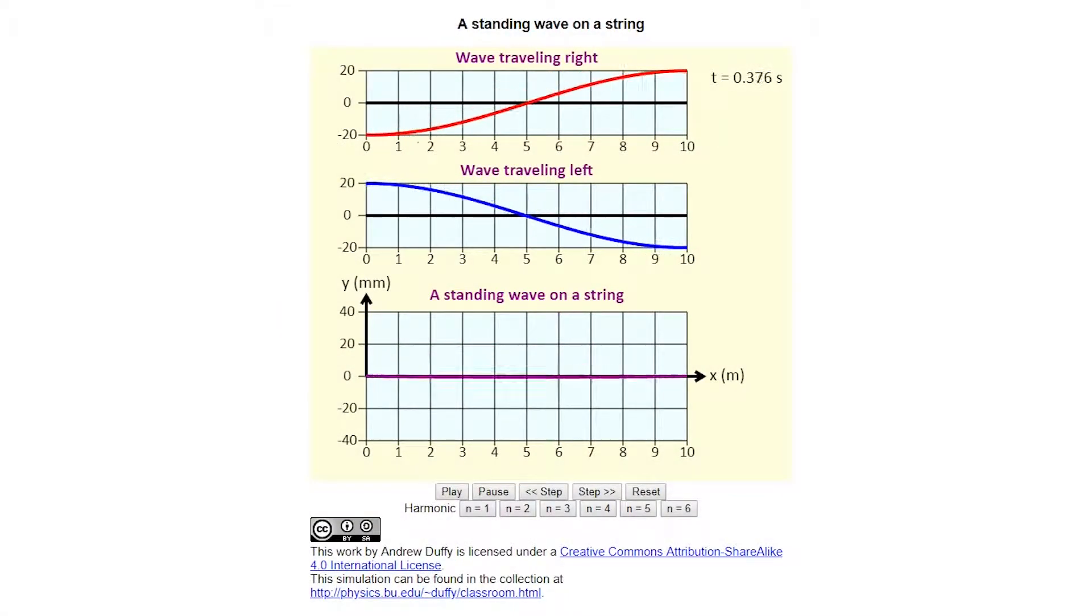This simulation illustrates waves on a string. The top panel displays a wave traveling to the right. The second panel displays a wave traveling to the left, a reflection of the first wave.